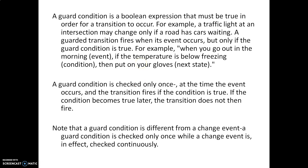Now what do we mean by a guard condition? We have already seen what a boolean condition is. A guard condition is a boolean expression that must be true in order for a transition to occur. For example, a traffic light at an intersection may change only if a road has cars waiting. Generally at a signal, everything depends on lights and timing — every lane is given a certain number of seconds during which the vehicles in that lane can move.